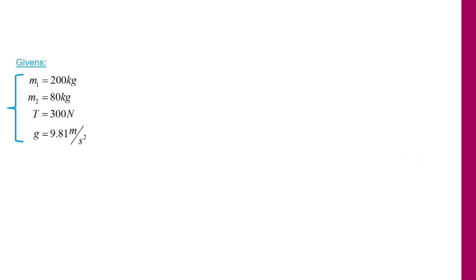I've written down here the givens from the problem description. The mass of the beam is 200 kilograms, the mass of the man is 80 kilograms, the force the man is pulling on the rope is 300 Newtons, and gravity is 9.81 meters per second squared.